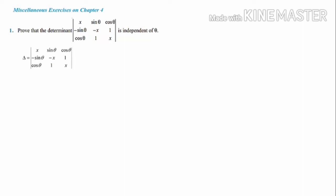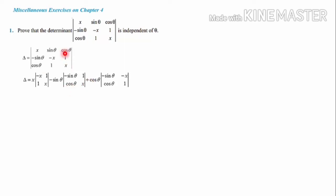Let's find out the value of this determinant by expanding along the first row. First row elements are x, sinθ and cosθ. For the first element x, that row and column is eliminated, giving remaining elements -x, 1, 1, x. Next, with sign minus sinθ, the remaining elements are -sinθ, 1, cosθ, x. Next, with sign plus cosθ, the remaining elements are -sinθ, -x, cosθ, 1.